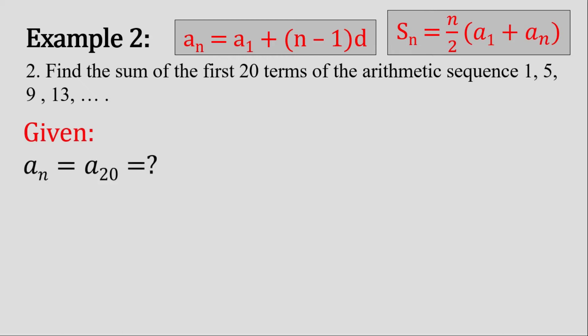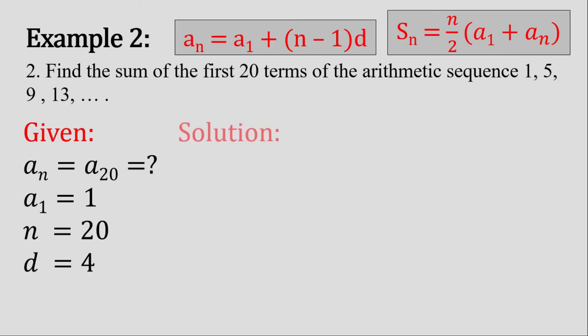For our given: a sub n will be a sub 20, a sub 1 will be 1, n is 20, and the common difference is 4. If you want to know more about how to find the common difference, just watch my previous video. A sub 20 is essential for us to get the sum of the first 20 terms — we use a sub 20 because we are asked to find the first 20 terms.